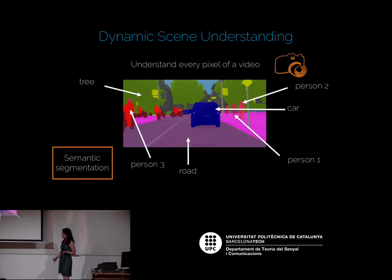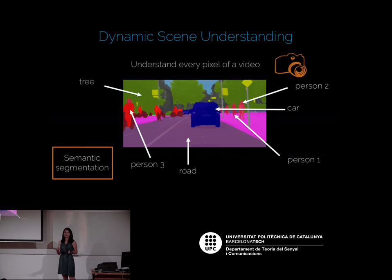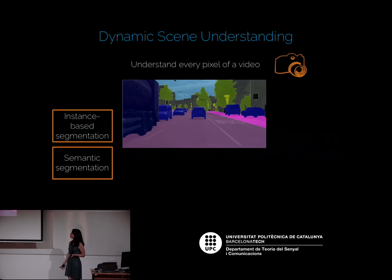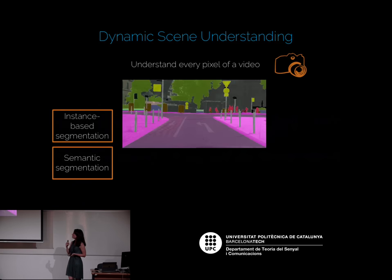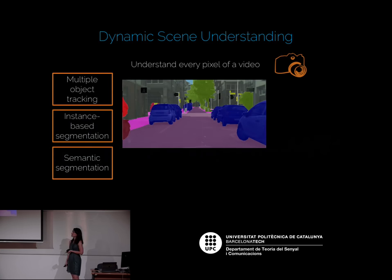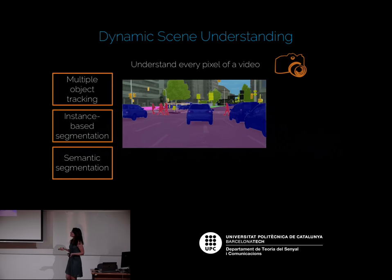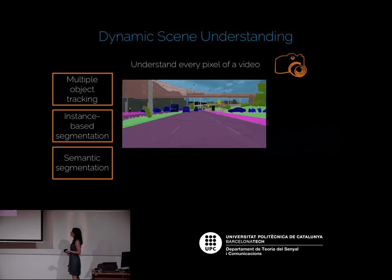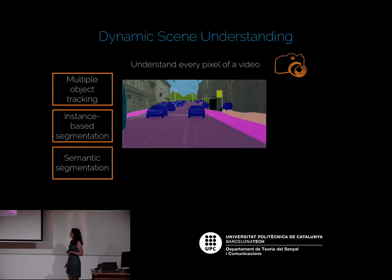But this is not the end story. We not only want to know which pixels belong to the class 'person', but we also want to identify each of the persons — which pixels belong to person one, person two, three, etc. This is the task of instance-based segmentation. And finally, we want to do this in time as well, performing multiple object tracking. Today though, I want to focus on the segmentation part — not semantic segmentation, but segmentation, going to a more simple problem.